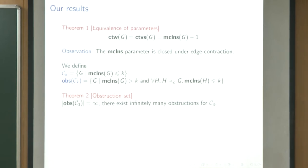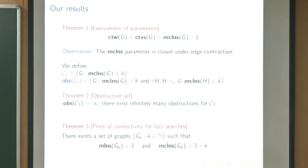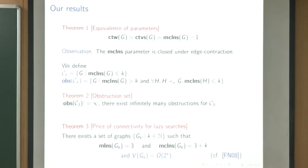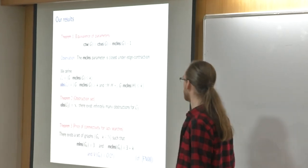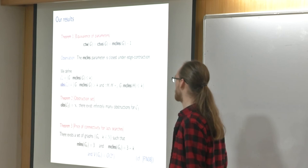Another result shows that the price of connectivity for lazy searches is high: there exists a graph Gk with monotone lazy node search number 3 and monotone connected lazy node search number 3 plus k, where the size of G is about 2 to the k. So there is a logarithmic difference between these two parameters.